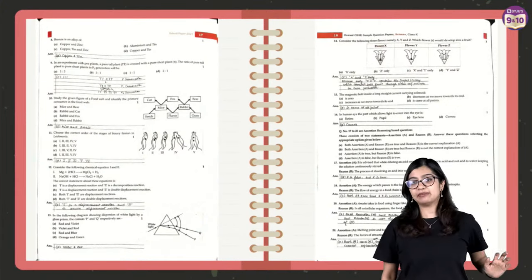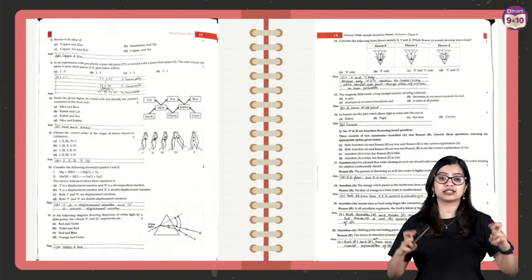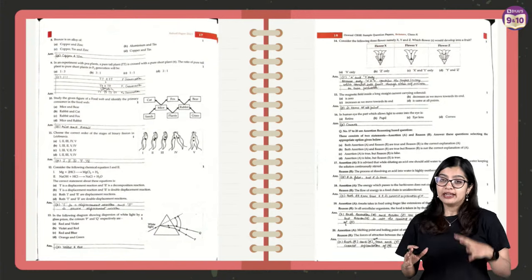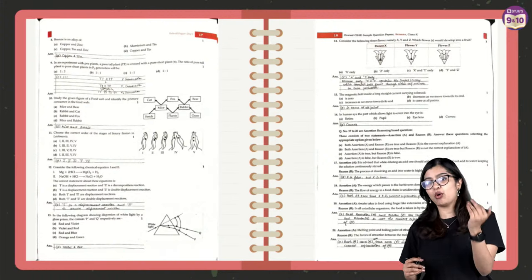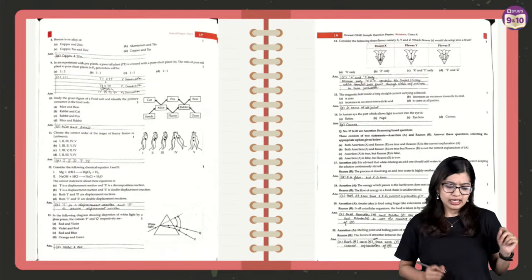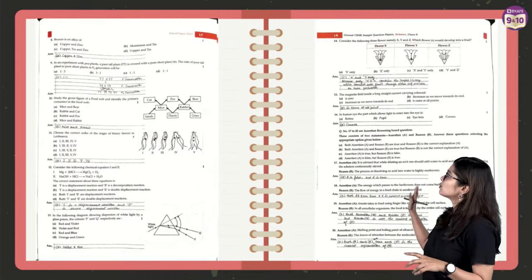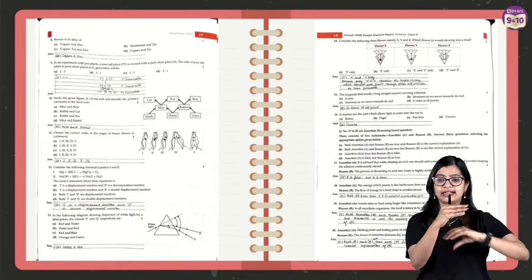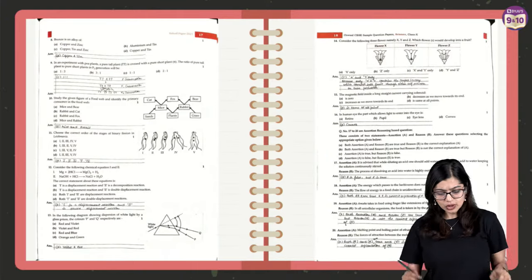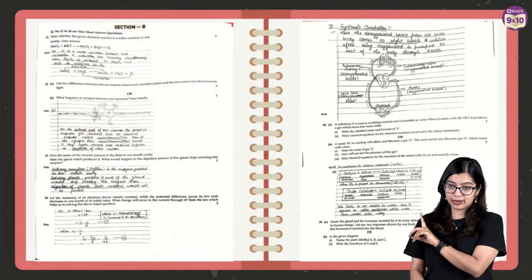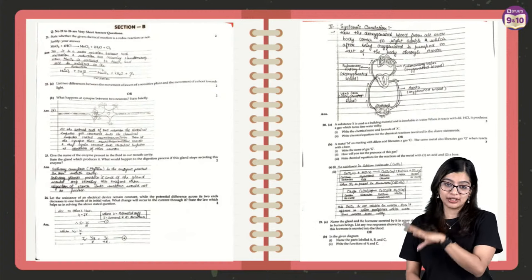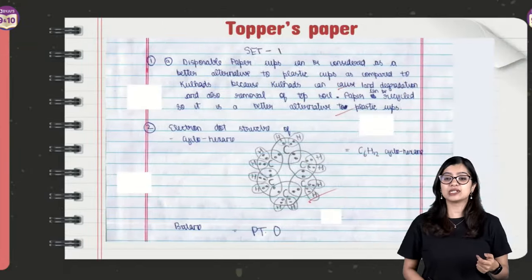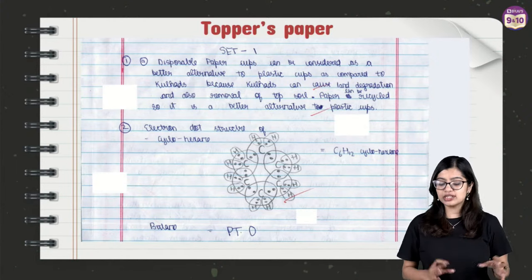Every year, CBSE releases a topper's answer sheet — I'm sure many of you have seen this. They show exactly how the answers are written. Last year's topper answer paper has been edited in a way where question and answer come side by side, so I'll be using the previous year's topper paper rather than last year's for reference.